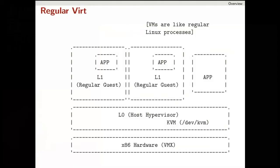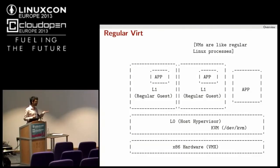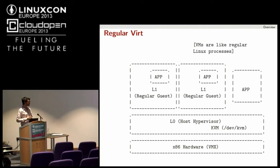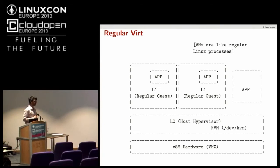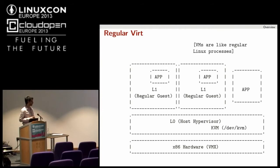In regular virtualization, at the bottom of the stack you have x86 hardware — Intel or AMD. Then you have your regular hypervisor, which exposes the /dev/kvm character device. Your regular guests run as any other process on your host. Each virtual guest also competes with other processes for resources, and the KVM kernel does the scheduling.